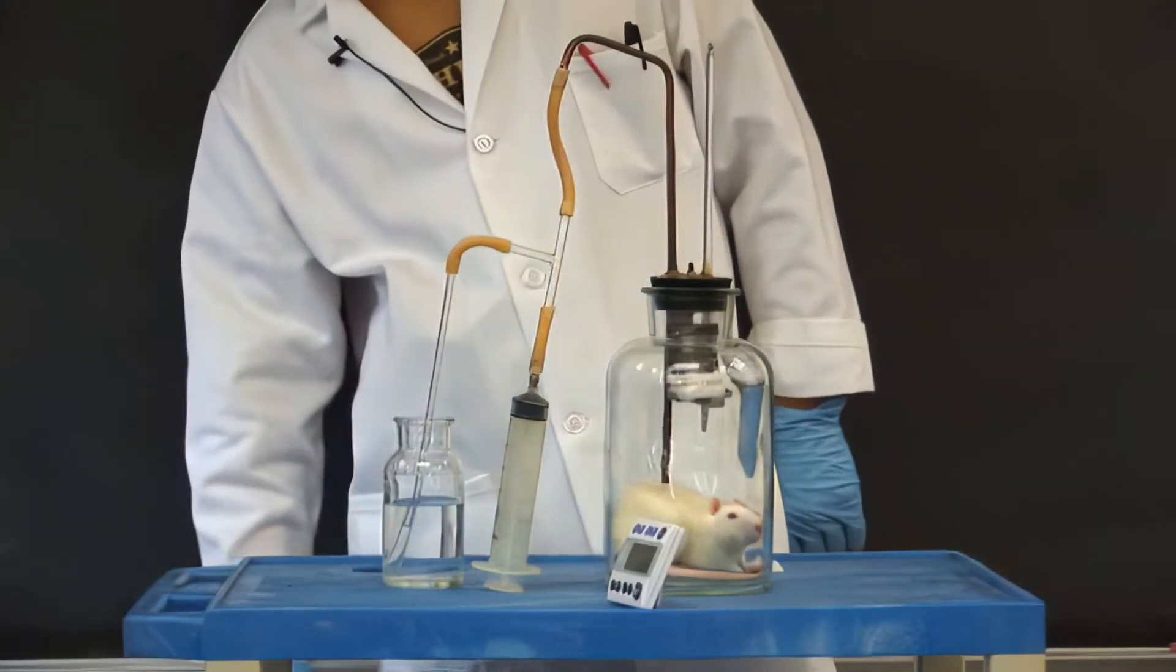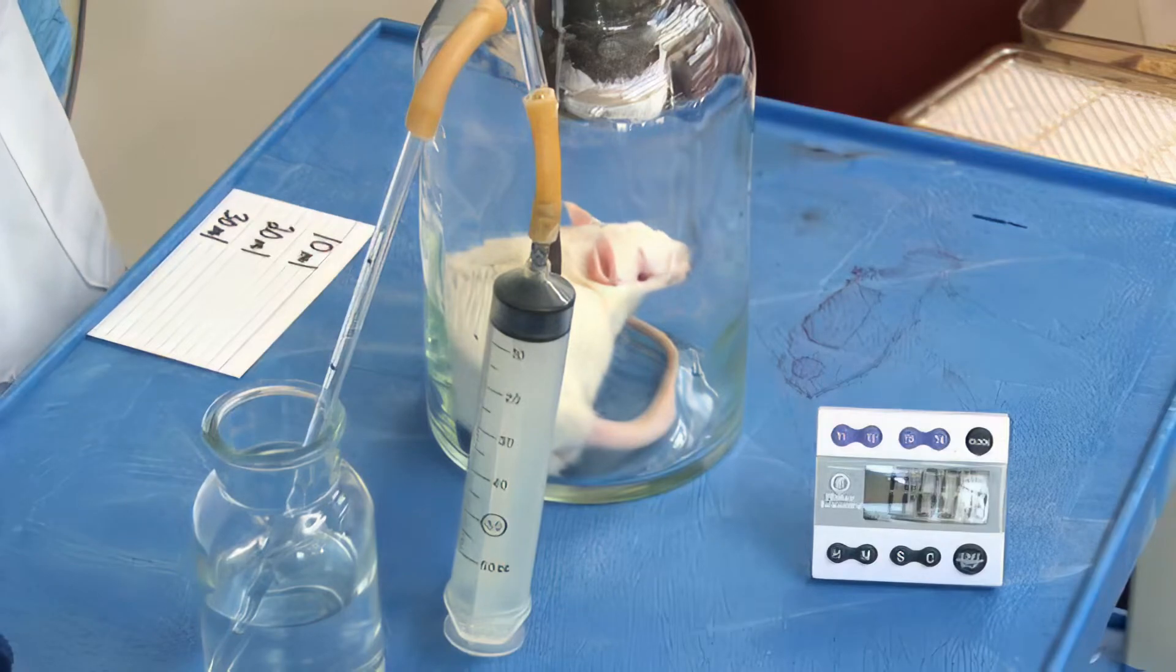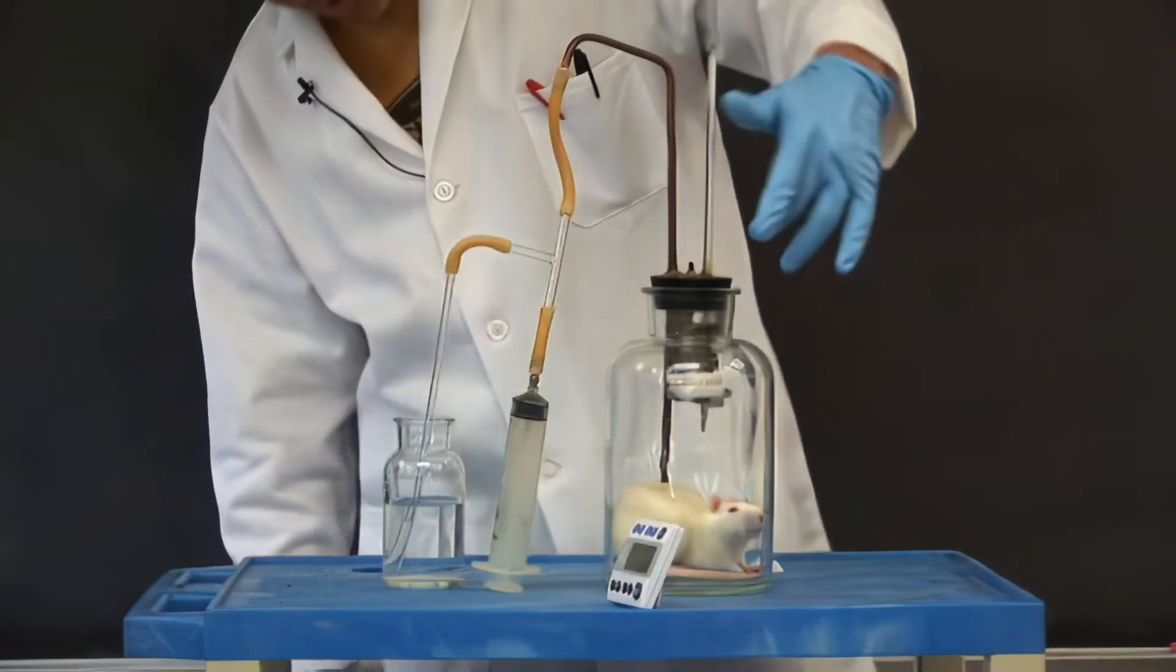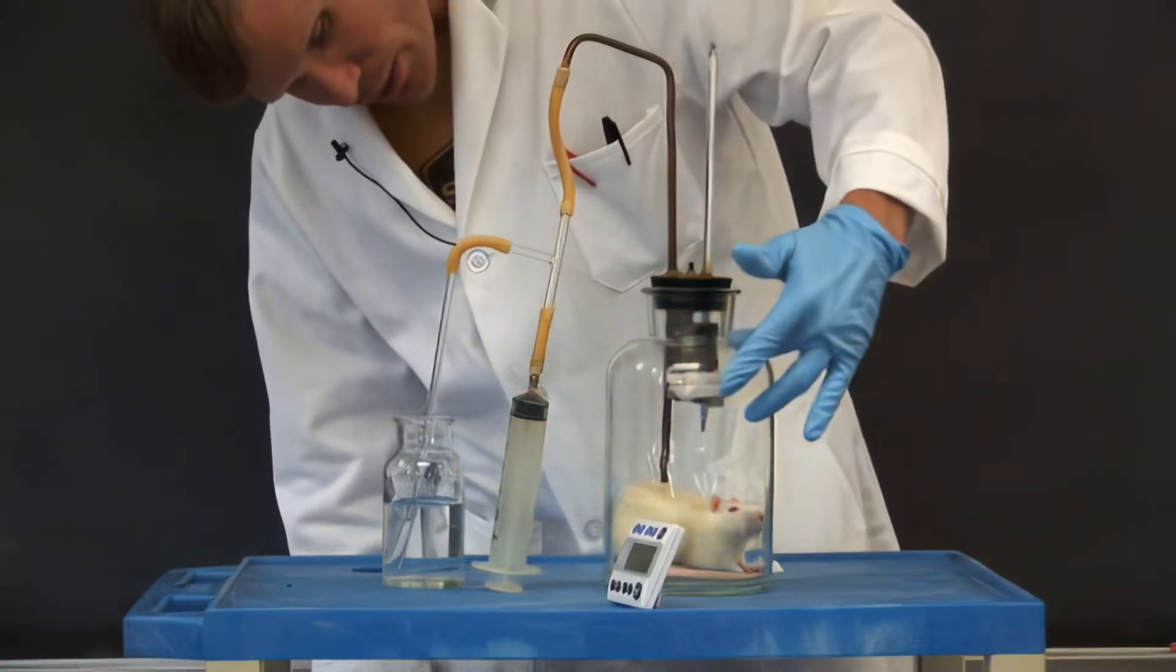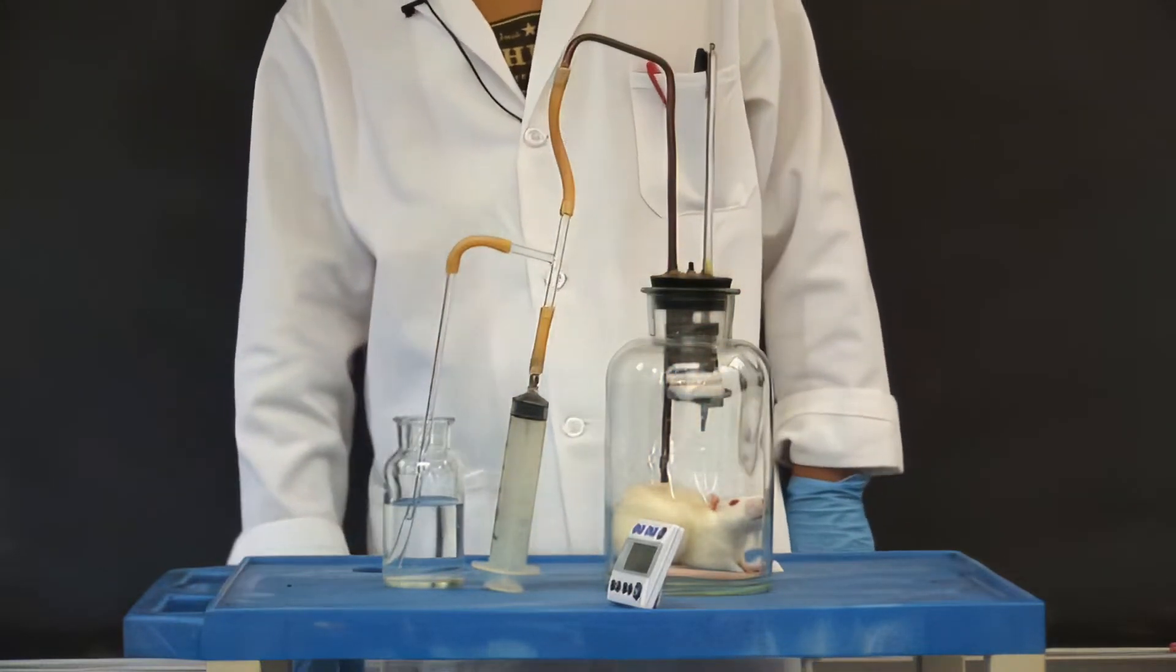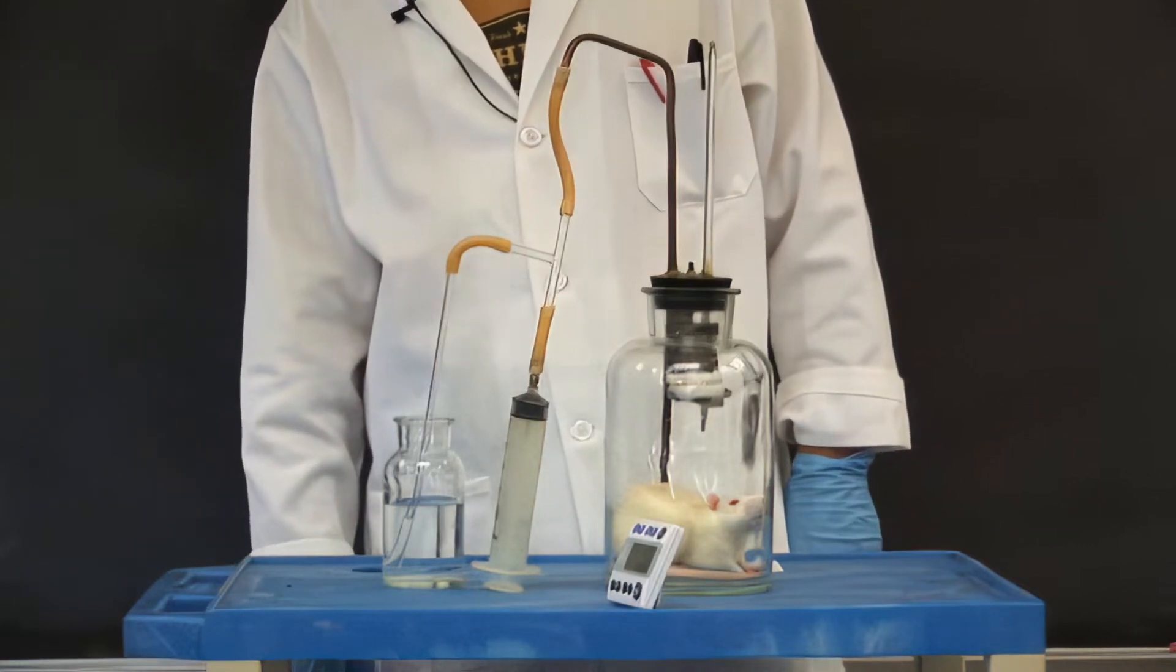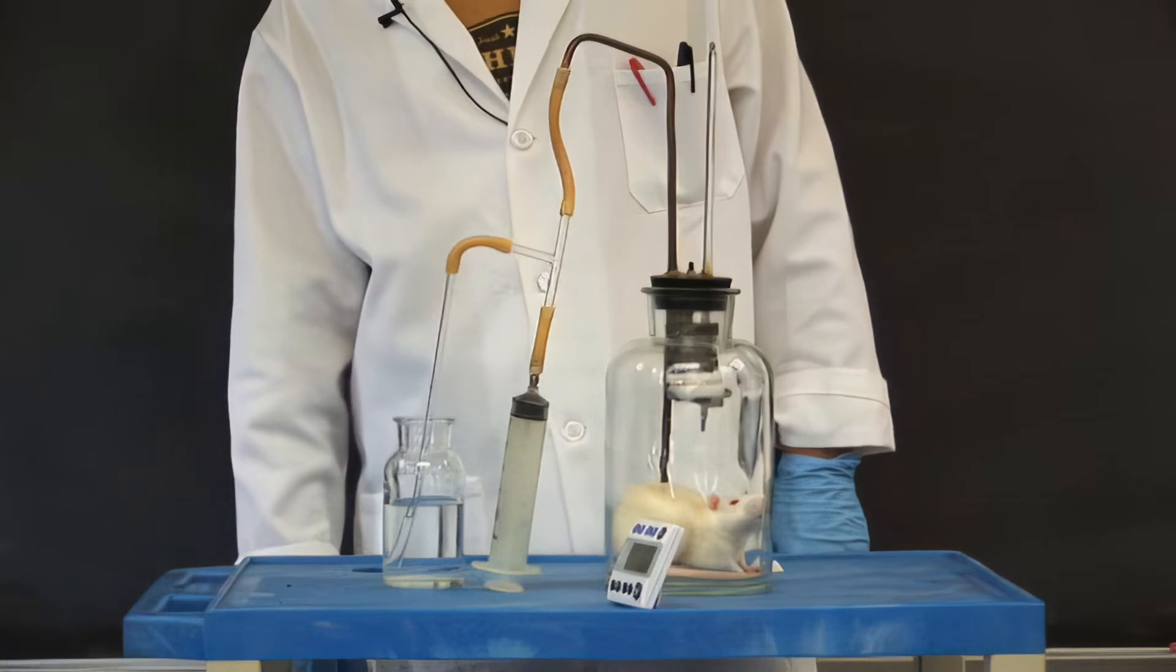So now the rat's in the sealed chamber, breathing, consuming oxygen. The small pot that has gauze wrapped around it has soda lime in it. That will absorb the CO2 that the rat evolves. Thus, there will be a net reduction in air pressure as the oxygen is consumed.